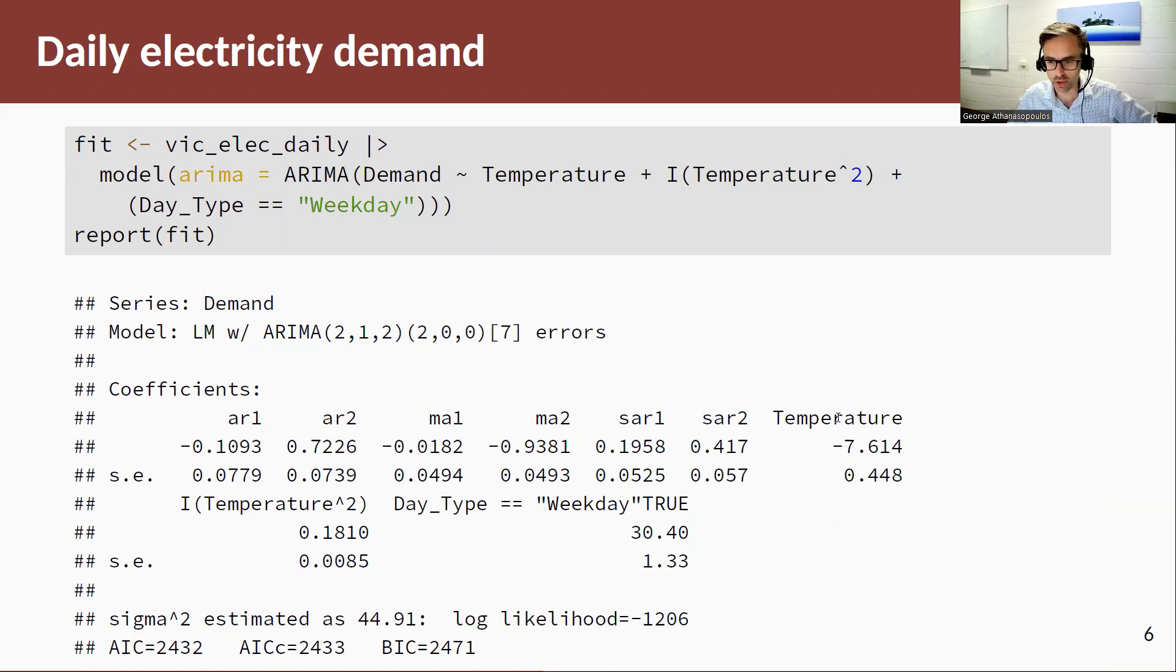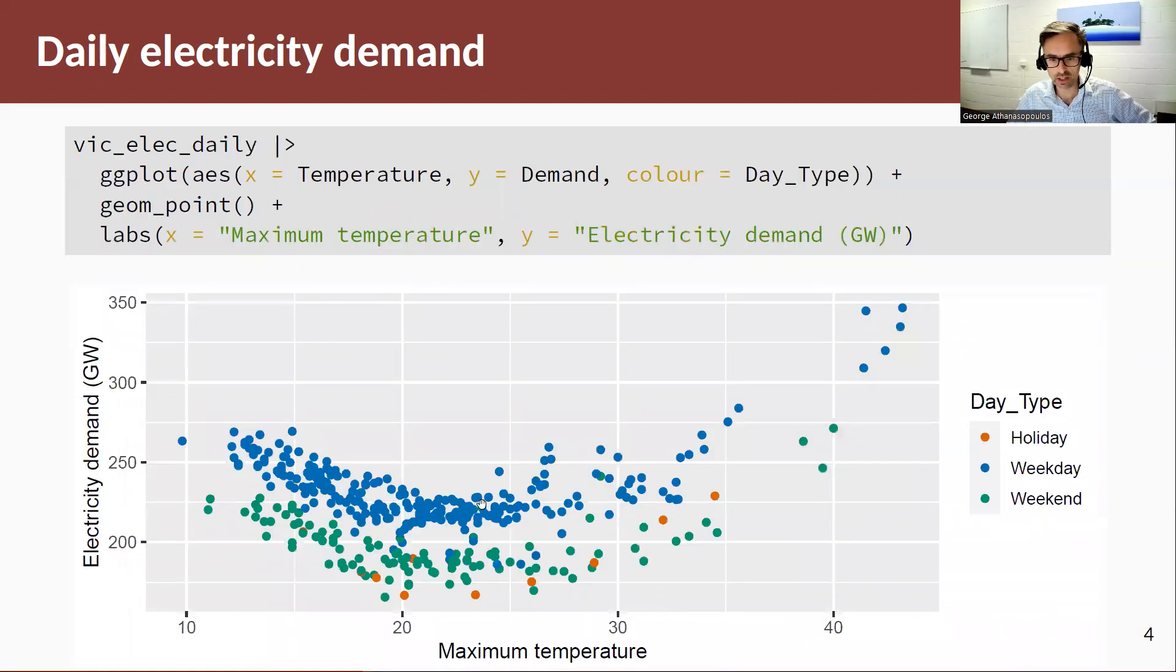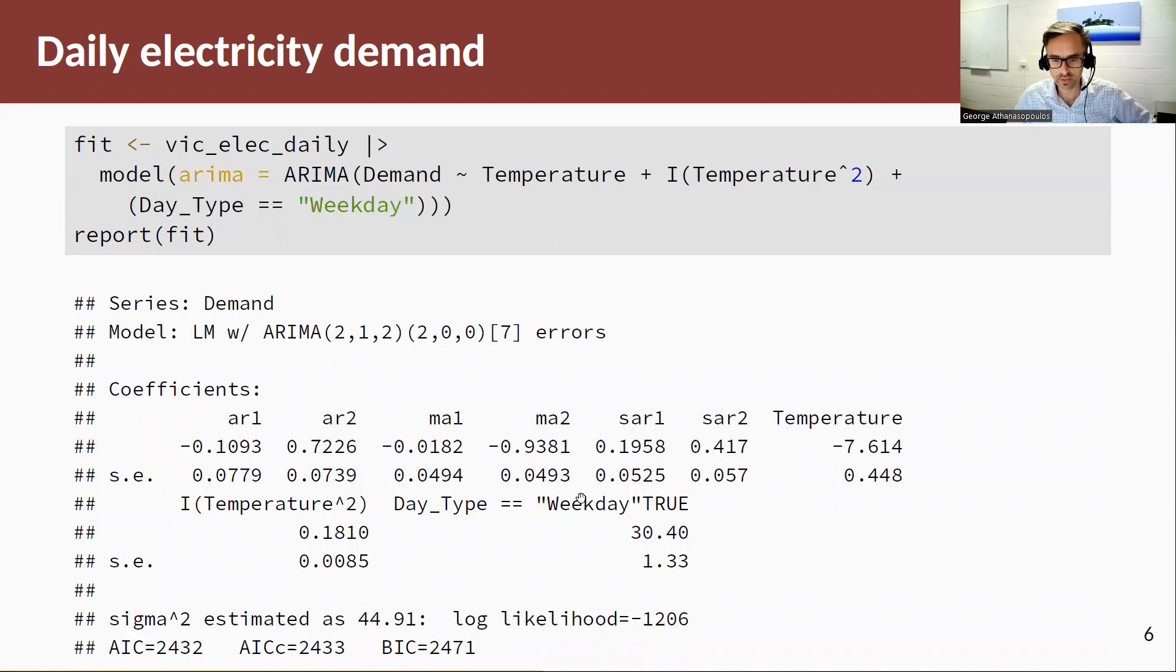Here are the coefficients of my regression. So here's the coefficient for the linear term. Here's the coefficient for the quadratic term. Here's the coefficient for my dummy variable. So if I consider this nonlinear relationship, there's a positive difference between weekdays and weekends as there should be. Okay, that's captured by this coefficient here.